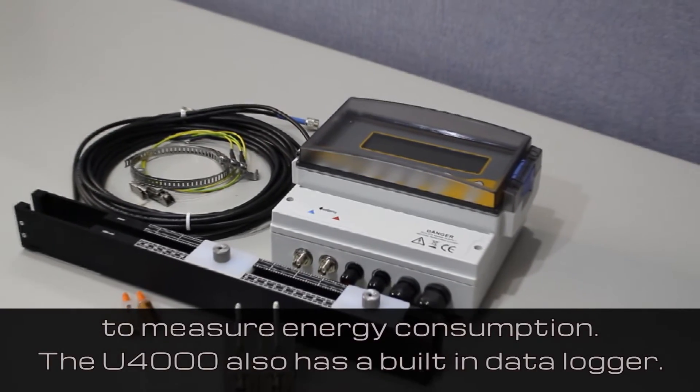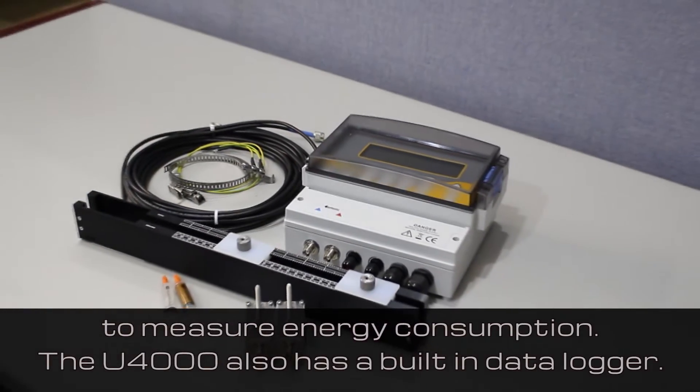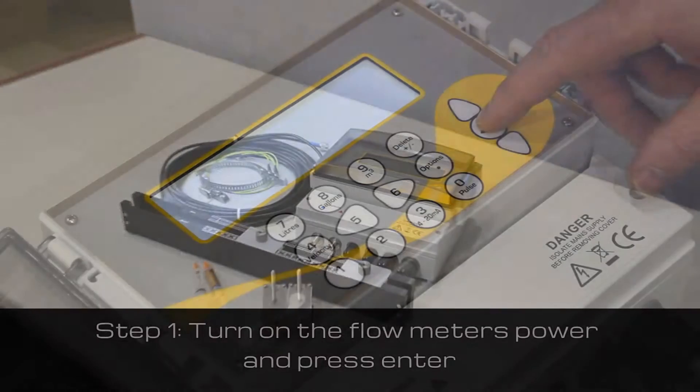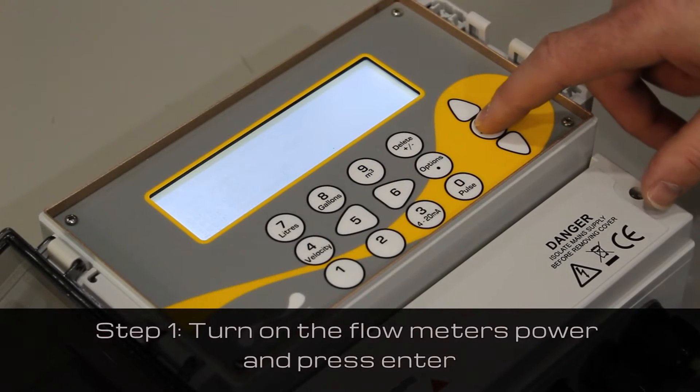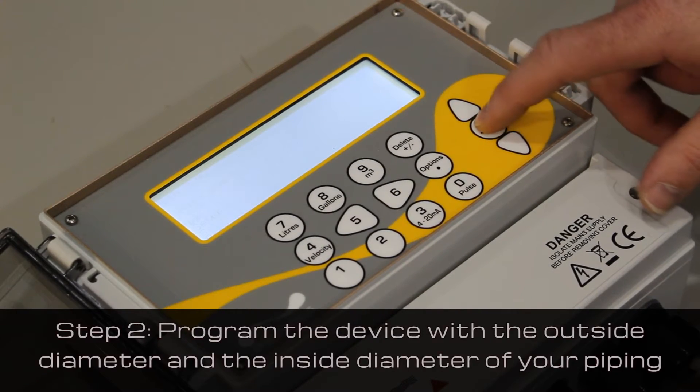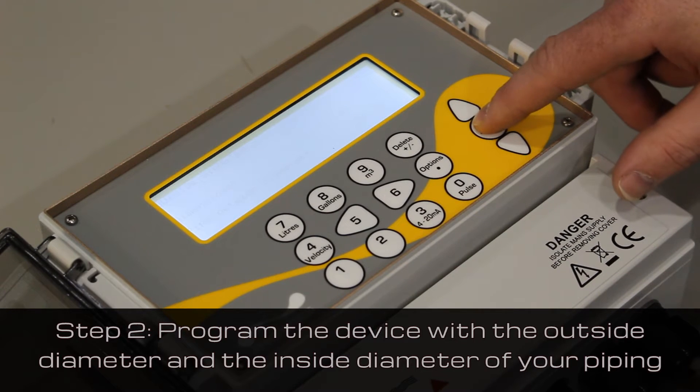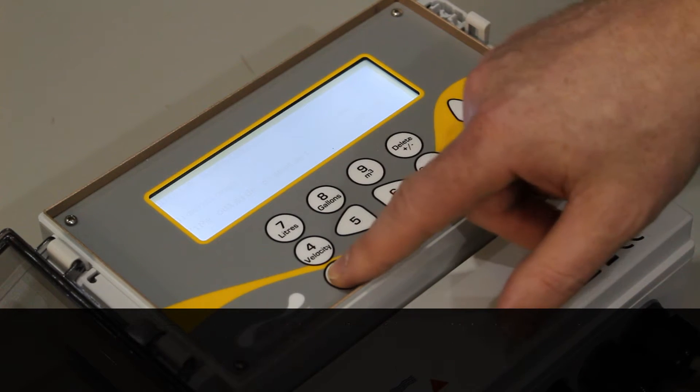The U4000 also comes with a built-in data logger. To begin, switch the device on and press enter. You will need to program the device with the outside diameter and the inside diameter of your piping.